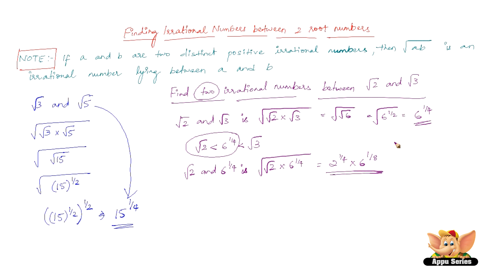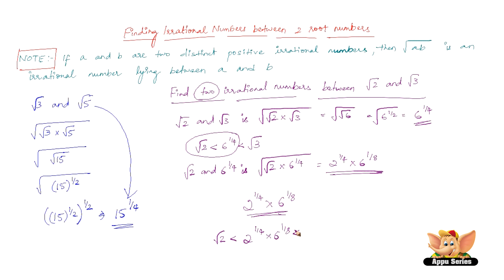So the required irrational number between √2 and 6^(1/4) is 2^(1/4) · 6^(1/8). Therefore the ordering is: √2 < 2^(1/4) · 6^(1/8) < 6^(1/4) < √3. This gives us two irrational numbers between √2 and √3: 2^(1/4) · 6^(1/8) and 6^(1/4).